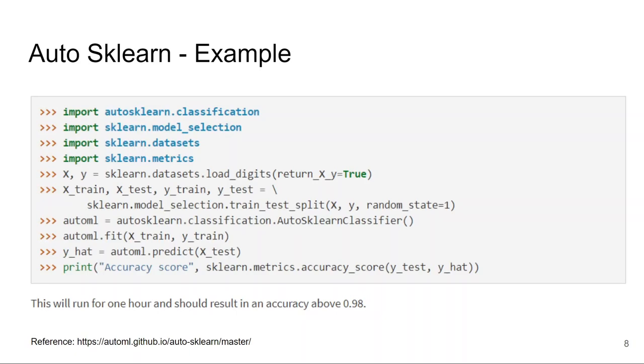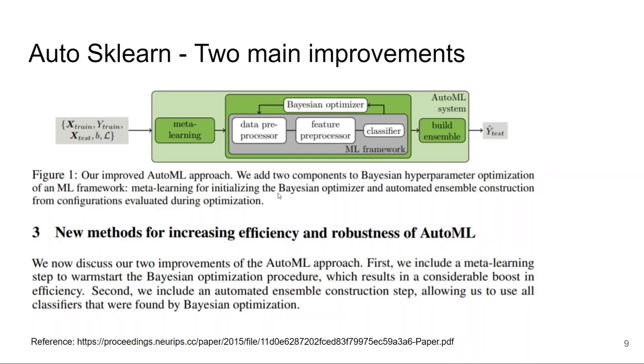Even on this digit dataset, this will take one hour to train and it will return you a model which gives an accuracy of about 98 percent, which is very good. In their paper, they discussed their improved AutoML approach. They have added two main components to Bayesian hyperparameter optimization. The first one is meta learning for initializing the Bayesian optimizer.